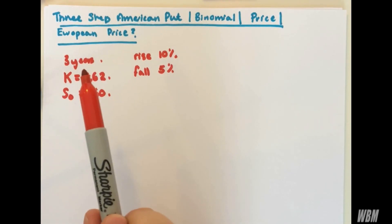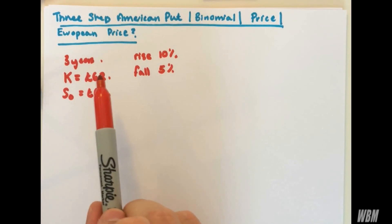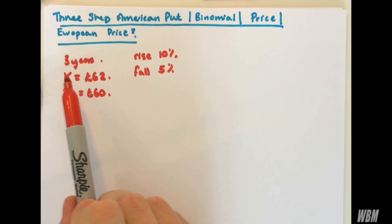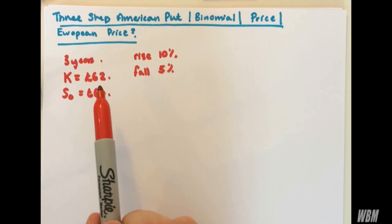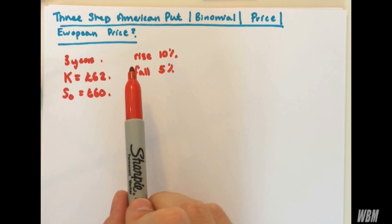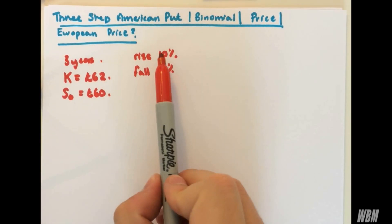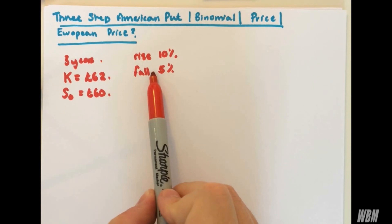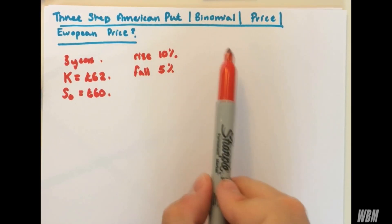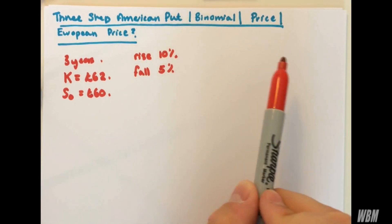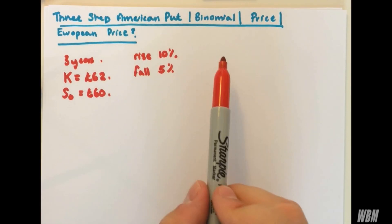Suppose you're offered an American put option expiring in three years with a strike price K of £62. The stock at time zero has an initial price of £60 in the three-year model, which is binomial. In a single year, the stock price may rise by 10% or fall by 5%, so already we can see somewhat of an upward trend, so it's more likely to increase.